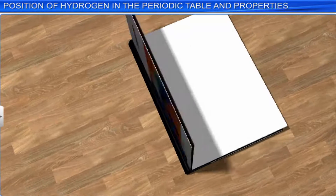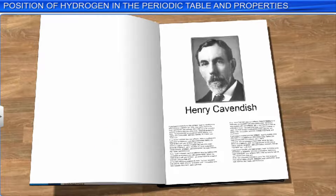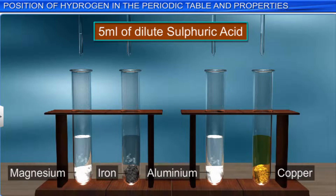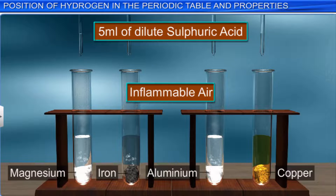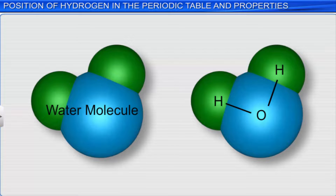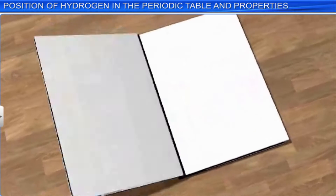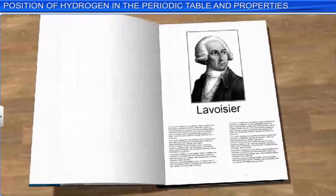The credit for discovering hydrogen goes to the British scientist Henry Cavendish. He obtained it by the action of dilute sulphuric acid on metals and described it as 'inflammable air.' However, later, when it was found that it was a constituent of water, it was renamed as hydrogen, which means 'water former' in Greek.